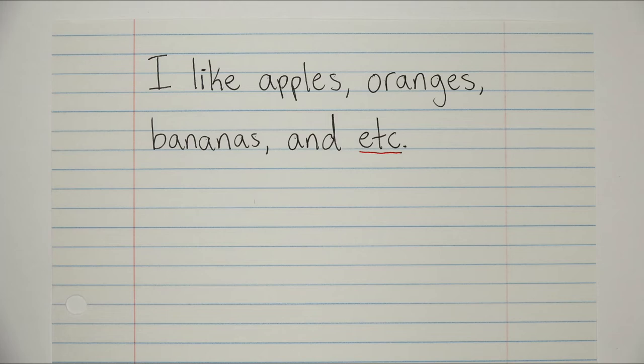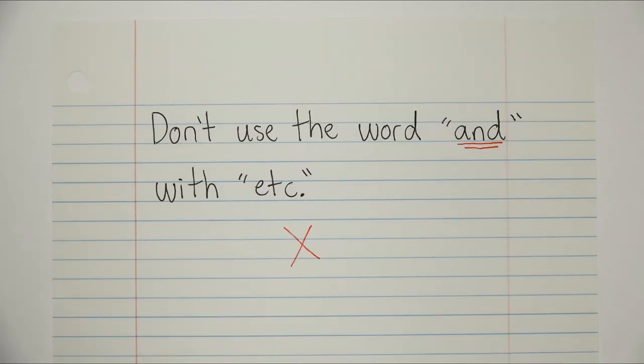So by actually writing the word and into our sentence, we'd technically be saying and and so on, and and so forth, which, as you can see, would be wrong. Okay, so just make sure you're not saying and etc, because the definition of etc already includes the word and.